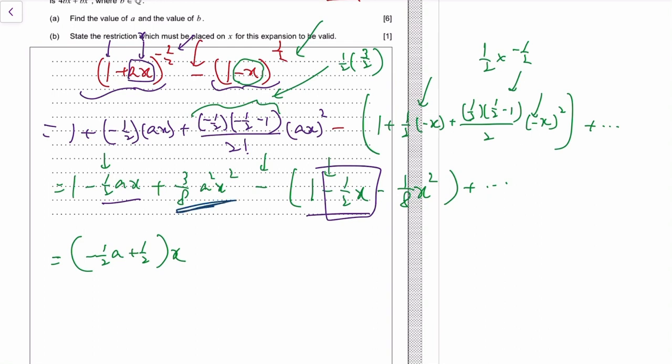And then we have the x squared term minus negative, 1 over 8 of x squared, so it's 3 over 8 a squared plus 1 over 8 x squared.